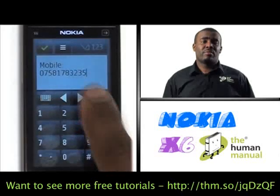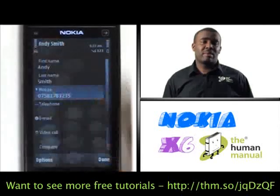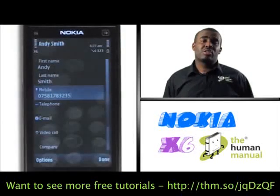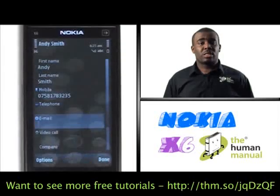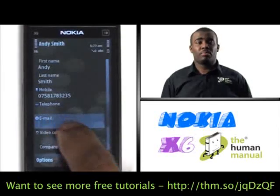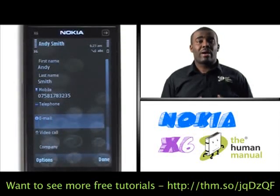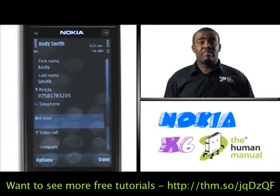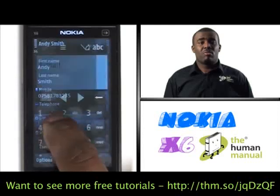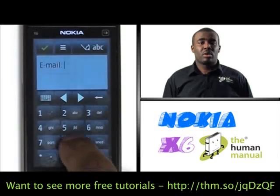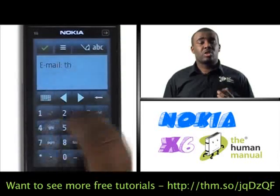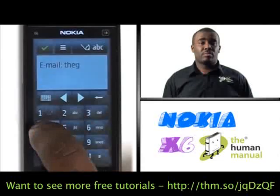Now you'll notice that you can add other information such as an email address. It's really good to add email addresses because with smartphones you can email whilst you're on the go. So now add your contact's email address — remember to use the symbols icon to add the at symbol. Once complete, touch the green tick icon.